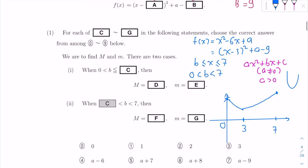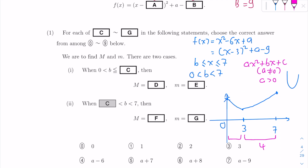Something important to notice: from 3 to 7 the difference is 4 units, whereas from 0 to 3 the difference is only 3 units. Since this is a parabola with its vertex at x equals 3, both sides increase at the same rate. Therefore, the value of f at 7 — which is 4 units from the vertex — will be bigger than the value of f at 0, which is only 3 units from the vertex. Keep that in mind.